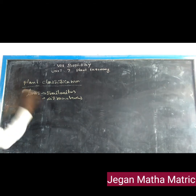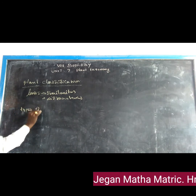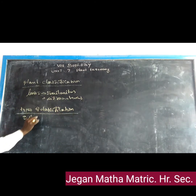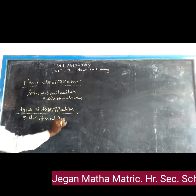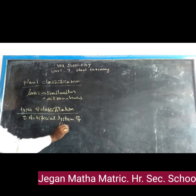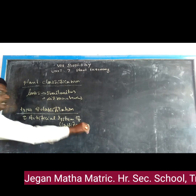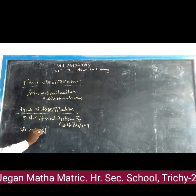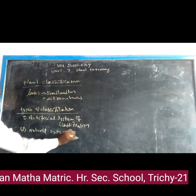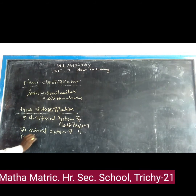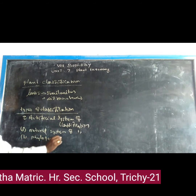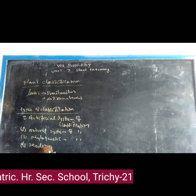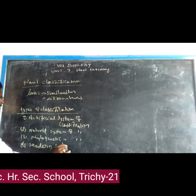Based upon classification, there are four types: one is the Artificial System of Classification, second is the Natural System of Classification, third is the Phylogenetic System of Classification, and fourth is the Modern System of Classification.